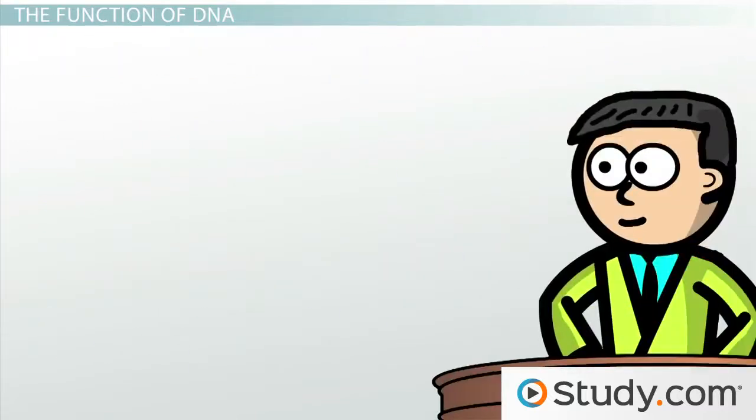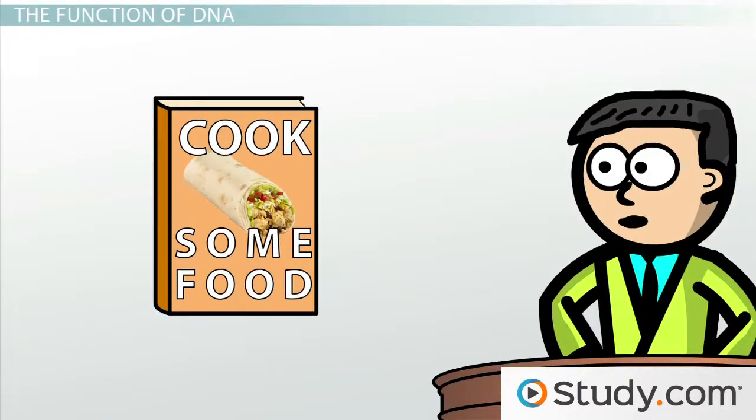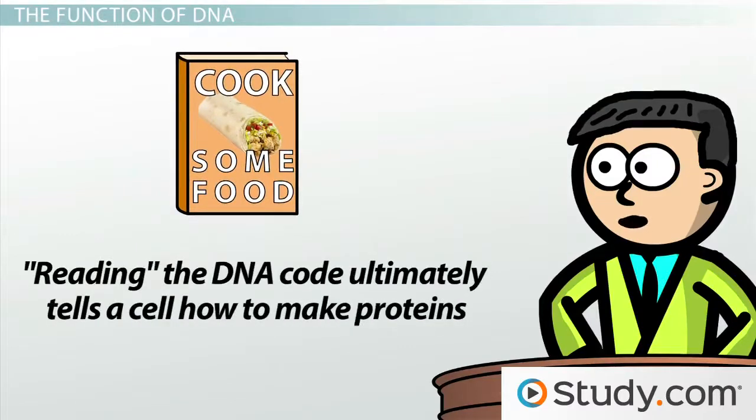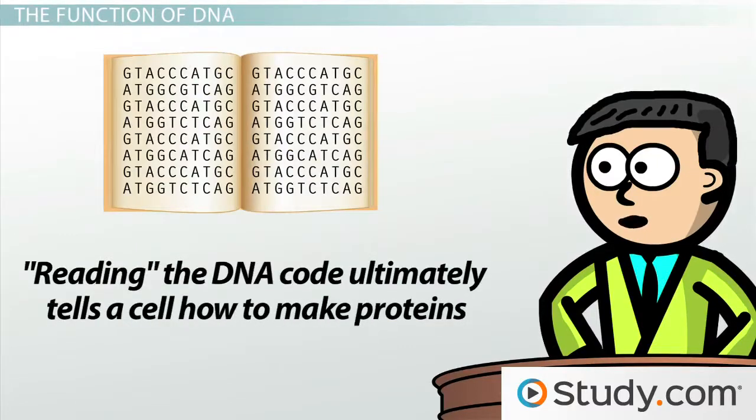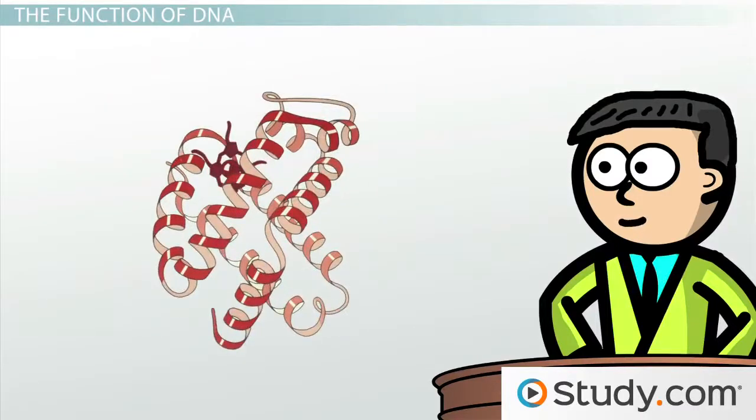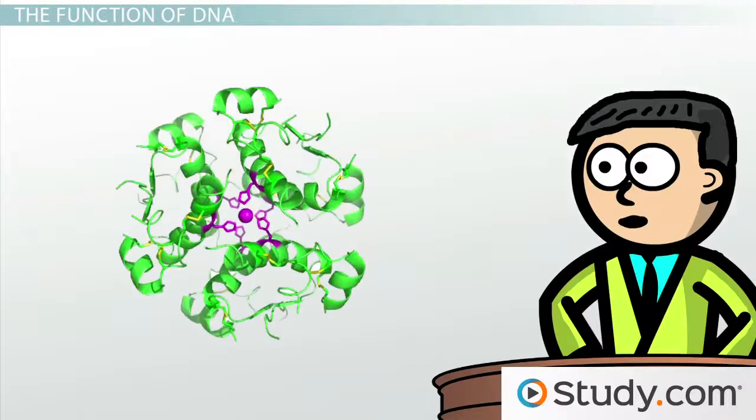If I may make an analogy to the case at hand, the information in DNA is like a recipe in one of our poor victims' cookbooks. Reading the DNA code ultimately tells a cell how to make proteins that it can use to perform various functions necessary for life. For instance, reading a specific sequence of DNA tells one cell how to make hemoglobin protein to carry oxygen molecules throughout the body. On the other hand, another cell might read a different recipe, which tells it how to make insulin protein to control blood sugar levels.